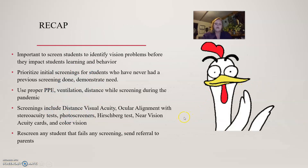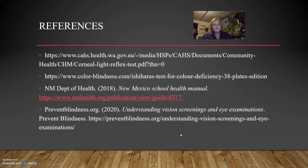To recap: it's important to screen students in elementary schools to identify vision problems before they impact learning and behavior. Prioritize initial screenings for students who have never had one or demonstrate need. Use proper PPE, good ventilation, and maintain social distancing while screening. Screenings include distance visual acuity, ocular alignment using stereo acuity tests, photo screeners, or the Hirschberg test, near vision acuity cards, and color vision testing. Re-screen any students that fail after two weeks and send a referral home to parents if needed. Thanks so much!